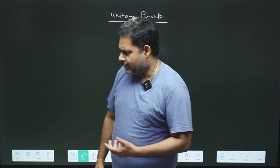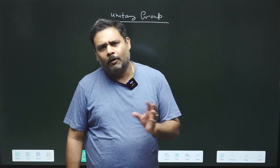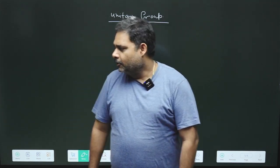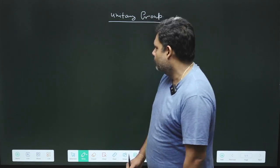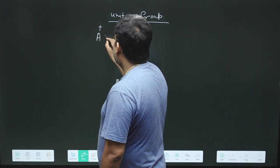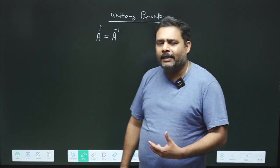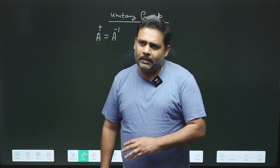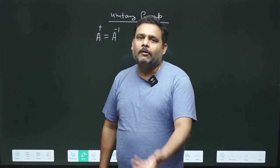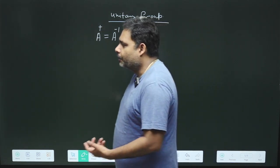What is a unitary matrix or unitary operator? When working in quantum mechanics, we generally use the word operator and we can treat operators in matrix form. So let us define what a unitary matrix or unitary operator is. Suppose we have an operator A. If A dagger is equal to A inverse, then A is said to be a unitary matrix. The dagger operation is the Hermitian transpose — you change rows to columns and columns to rows, and take the complex conjugate. So A dagger equals A inverse is the property of a unitary matrix.